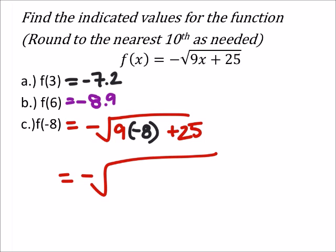So, it's the negative square root of 9 times negative 8 is negative 72, plus 25 is negative 47.